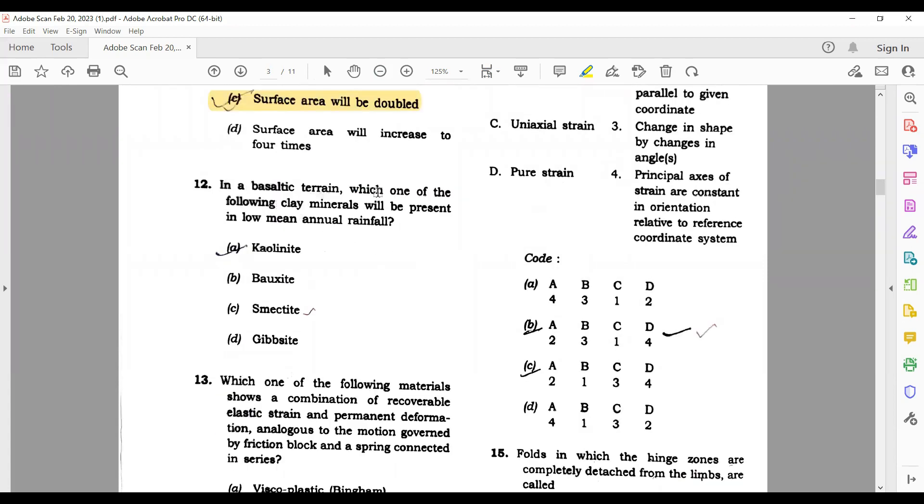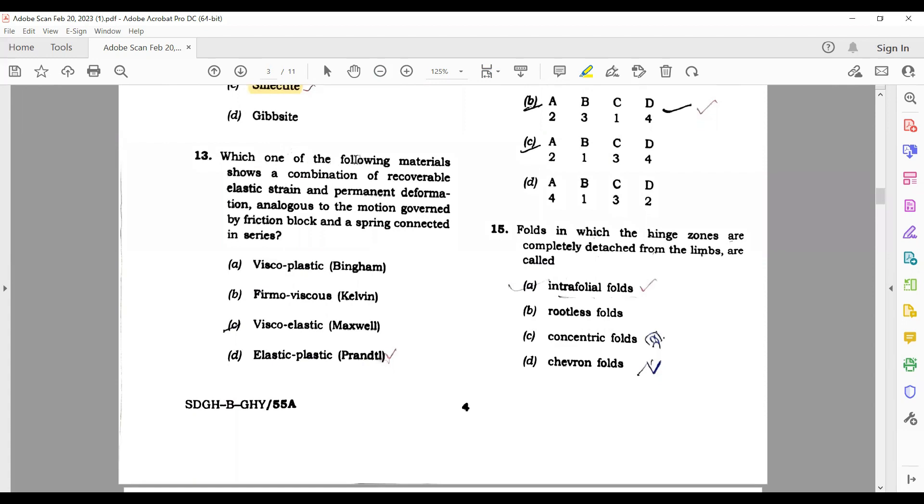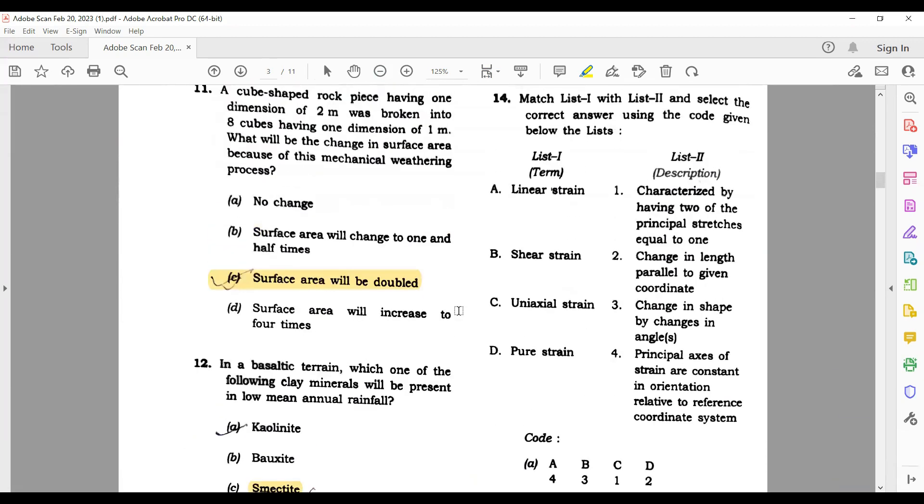In a basaltic terrain, which one of the following clay minerals will be present in the low mean annulments? Smectite is the right answer here. Which one of the following materials shows a combination of recoverable elastic strain and permanent deformation? Its correct answer is elastic plastic.